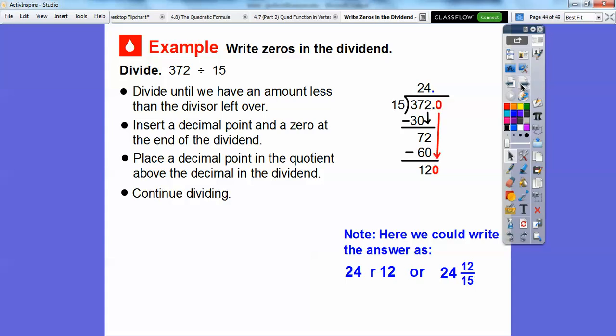Let's slide that zero down. Now check this out. Fifteen times four gave us 60. If we double 60, that gets us 120. So if we double four, that's going to get us eight. Fifteen times eight is 120. Then we subtract and we finally get a remainder of zero. So 372 divided by 15 is going to get us 24.8.